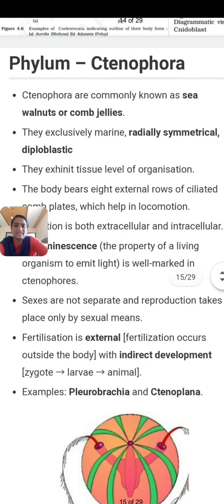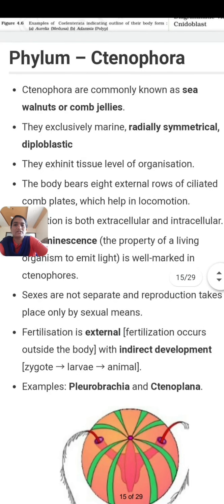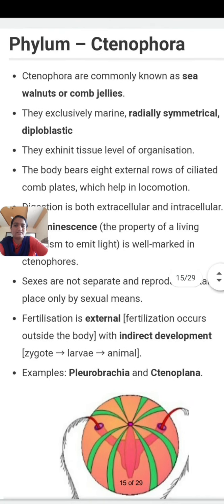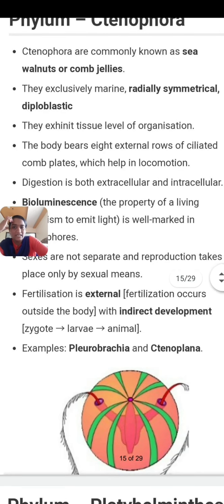Next character is habitat — they are marine. Then symmetry — they are radially symmetrical. Next, they are diploblastic, meaning they have two germ layers. They exhibit tissue level organization, meaning they are more evolved compared to the poriferans.